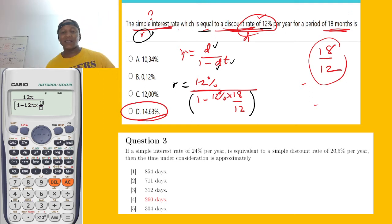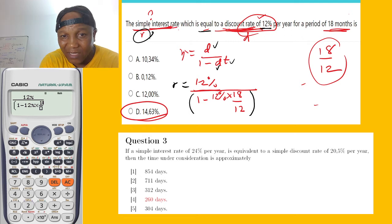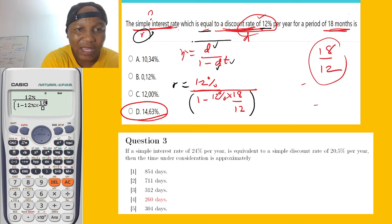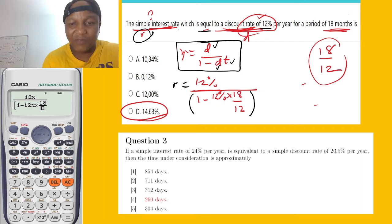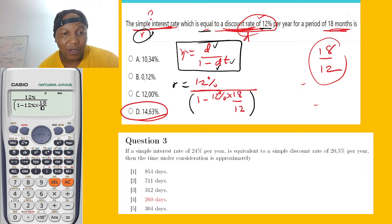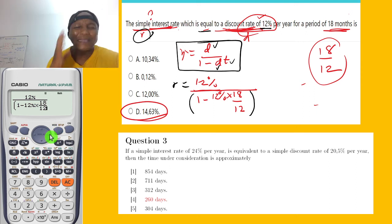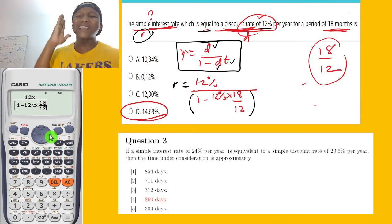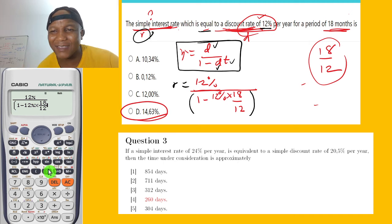Now let me show you the second question, which is very similar and very important. Whenever you have a relationship between discount rate and interest rate, you have to use this formula. You don't have to be too serious with math — just have some fun, that's how you do math.